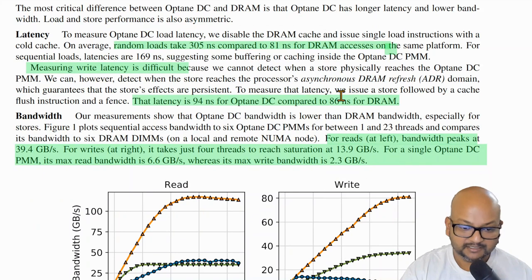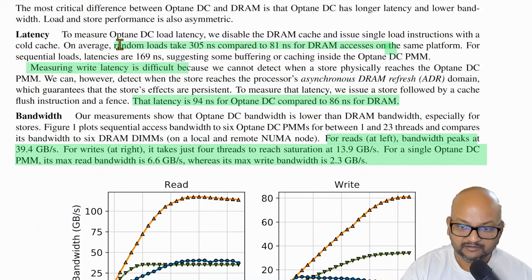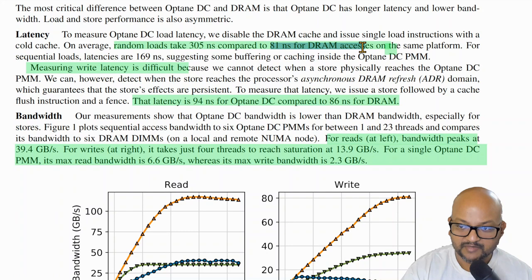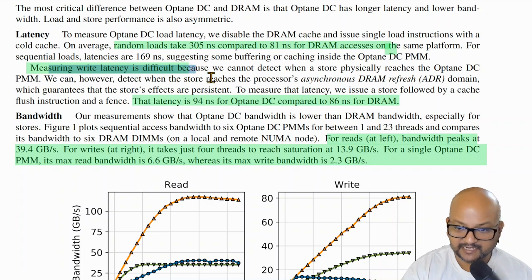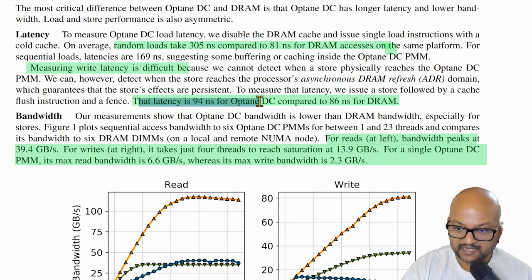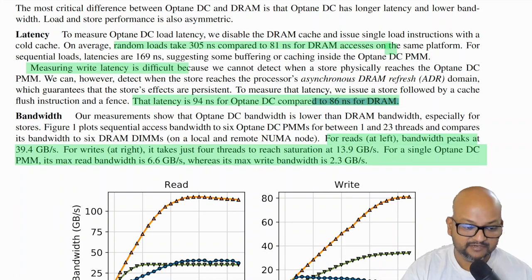Now let's get into some of the performance benchmarks. The authors found that random reads on Optane take about 300 nanoseconds, which compares to about 80 nanoseconds for DRAM. There are some caveats with respect to measuring write latency, but it's a much closer race for writes. The write latency is around 94 nanoseconds for Optane and 86 nanoseconds for DRAM.